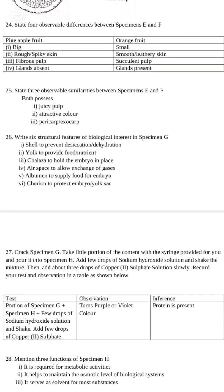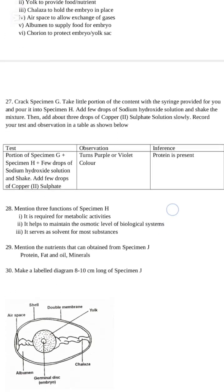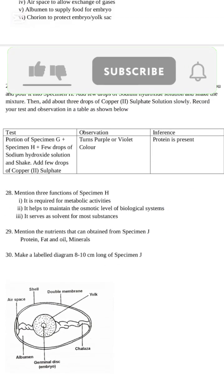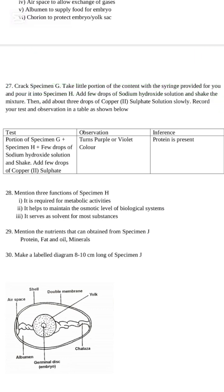Number 24: State four observable differences between specimen E and F. I'll be scrolling up gently — you can pause this video if you did not get it. By God's grace, this is the end. Check it very well, study it, and make sure you understand. On this channel we also have chemistry, physics, and mathematics. For chemistry practical and physics practical, I will also bring out the likely questions. Please subscribe, like this video, share with friends, and press the notification bell so that when I release another video you will be notified. Thank you and God bless.